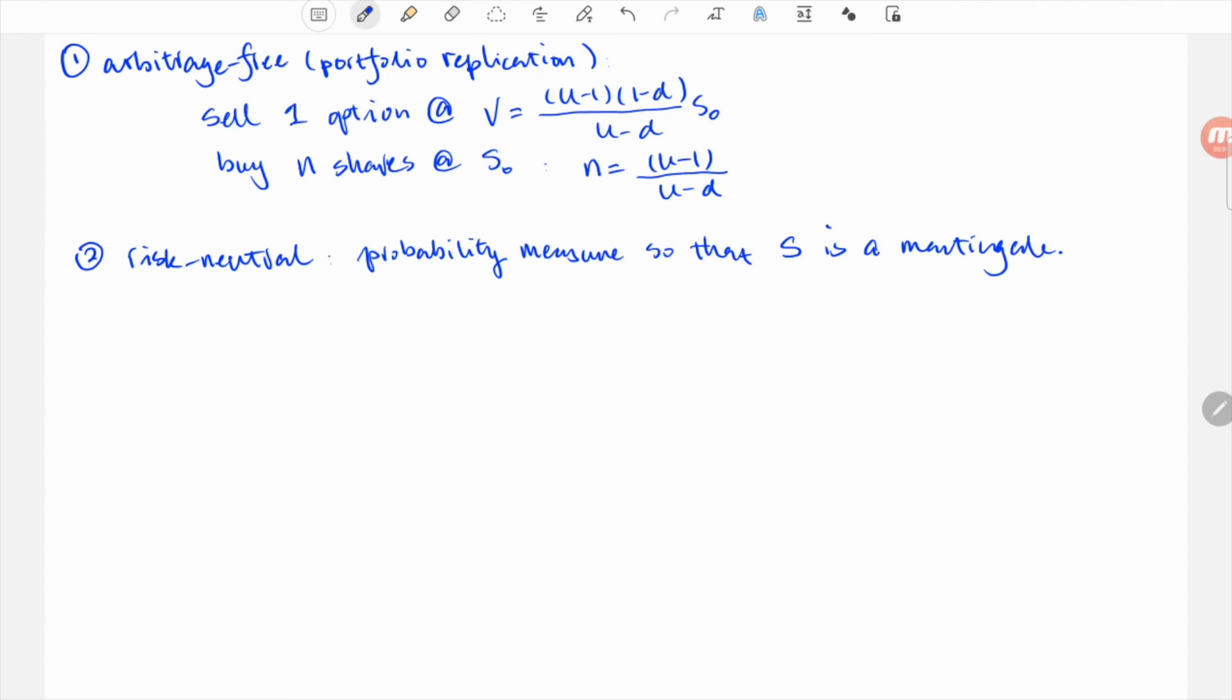The idea is that the expected value of the underlying shouldn't change. Since we know the two possible outcomes of the final price, we can use this constraint to derive a probability of the stock going up and down such that the constraint is met. Since the expected value stays the same with this risk probability, we will call it risk-neutral probability.